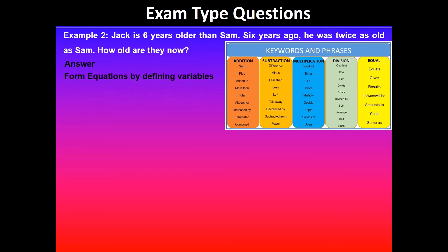So we'll form equations by defining the variables. In this case we can let x be Sam's age now. Then Jack is six years older, so x plus six will represent Jack's current age. And then we are told that six years ago he was twice as old as Sam.